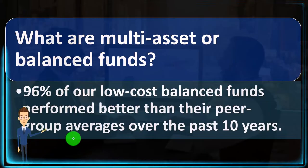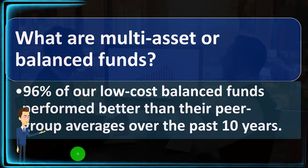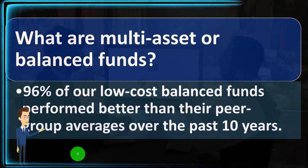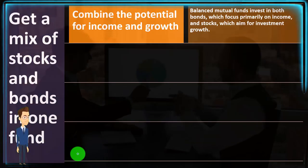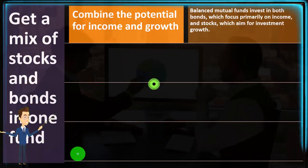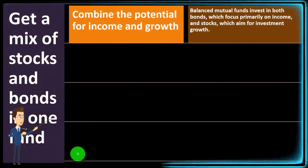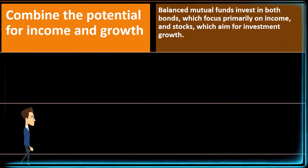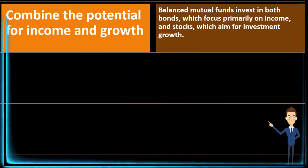So what are multi-asset or balanced funds? According to Vanguard, 96% of their low-cost balanced funds performed better than their peer group averages over the past 10 years — though that concept applies beyond just Vanguard. You get a mix of stocks and bonds in one fund, combining the potential for income and growth. Balanced mutual funds invest in both bonds, which focus primarily on income, and stocks, which aim for investment growth.